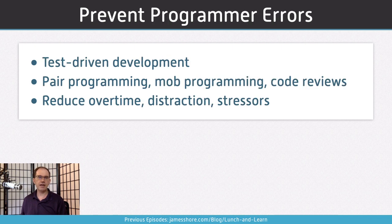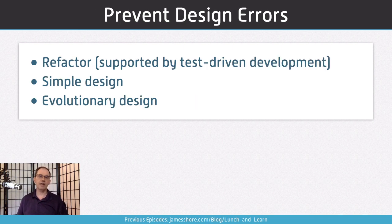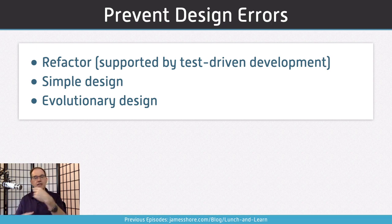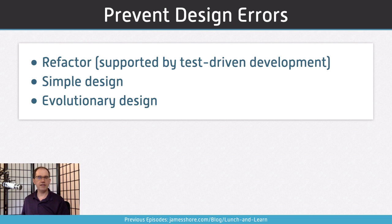Pair programming and mob programming are really helpful for design because you've got at least one person 100% of the time thinking about design. When you're pairing, that other person isn't there to catch semicolon errors — they're there to think about design. Something else that's helpful is simple design: do the simplest thing that could possibly work, only solve the problems you have in front of you. And along with that, use evolutionary design — incrementally improving the design as you go. You can find links to writing and a talk on evolutionary design in the readme of the code repo at github.com/jamesshore/livestream.